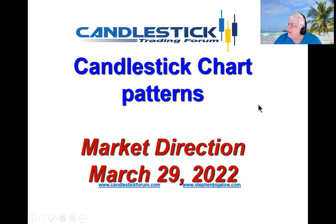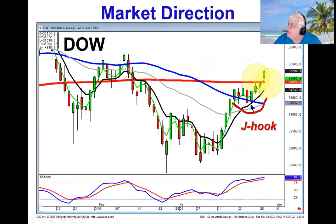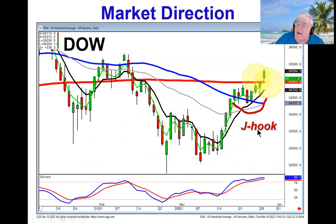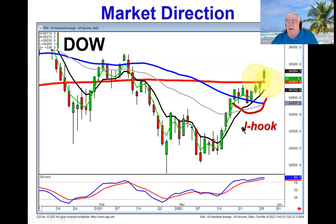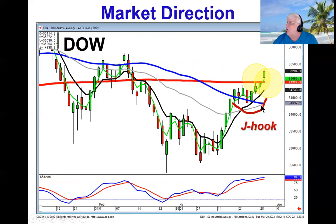So we can see this week there's a J-hook pattern in progress on the Dow. The J-hook pattern is a very easy to identify pattern — Wave 1, Wave 2, Wave 3. And it becomes even more identifiable or more visual when it comes back to a support level, like the Dow did.